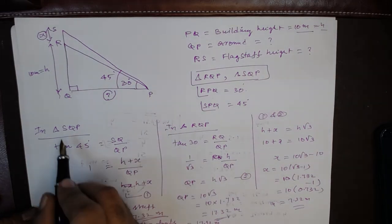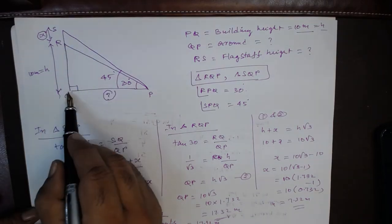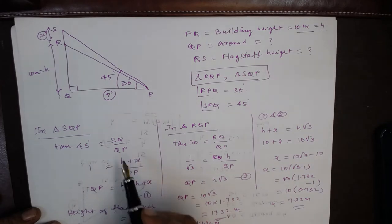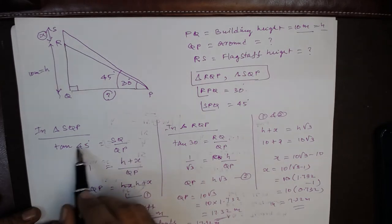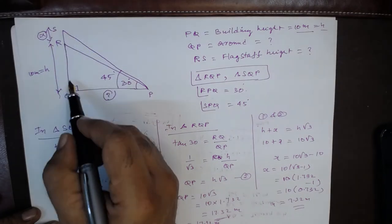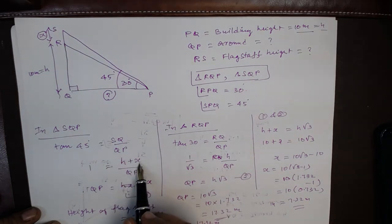Let us consider triangle SQP. Tan 45 is equal to SQ divided by QP. Tan 45 is 1. SQ is nothing but SR plus QR, that is H plus X. H plus X divided by QP. So QP is equal to H plus X. This is the first equation.